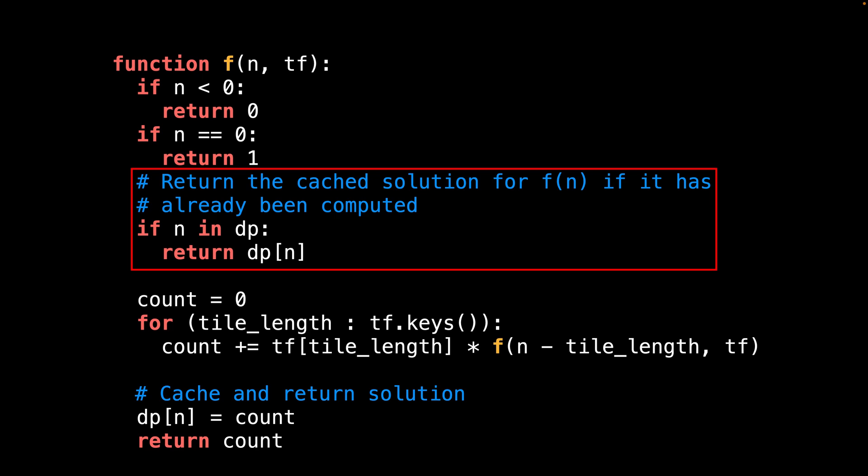The next thing we do is check the cache to see if we have already computed the solution for f(n), and return a result if we have. This is the optimization that really speeds up the recursive implementation since we're avoiding recomputing already known solutions to subproblems.